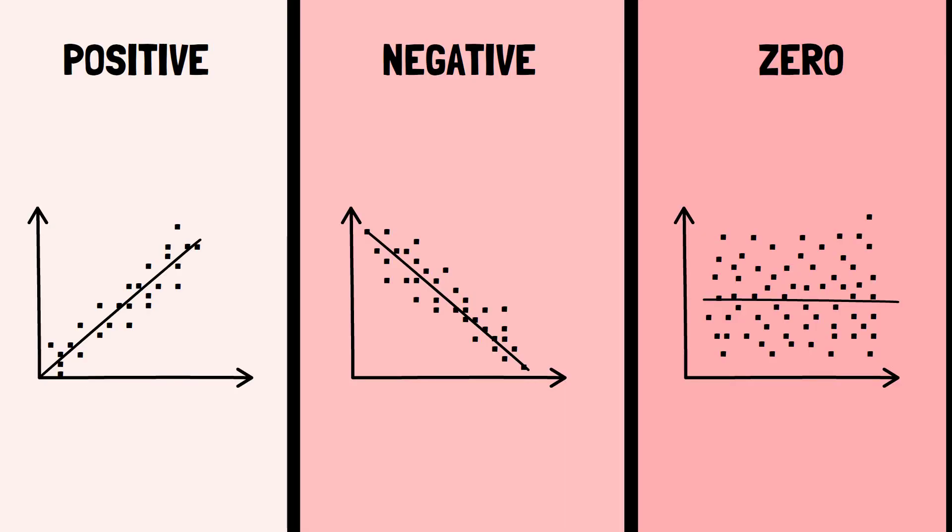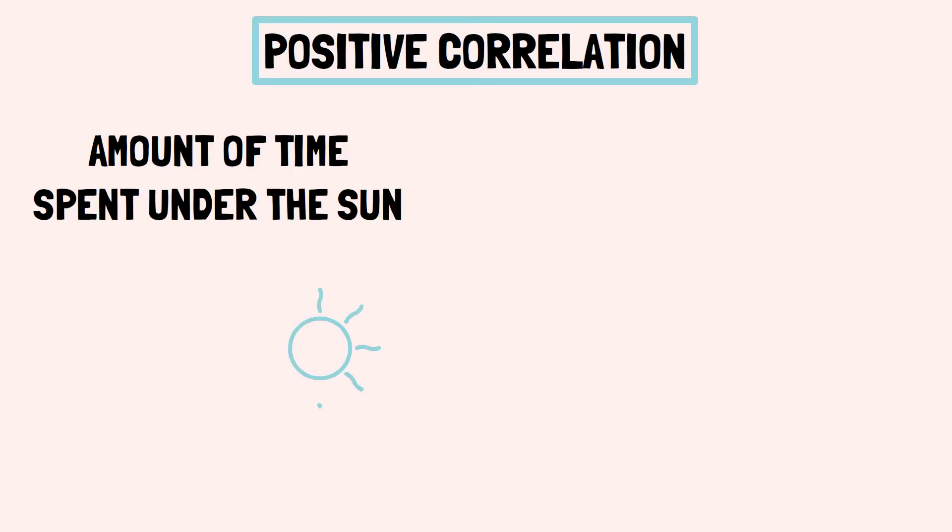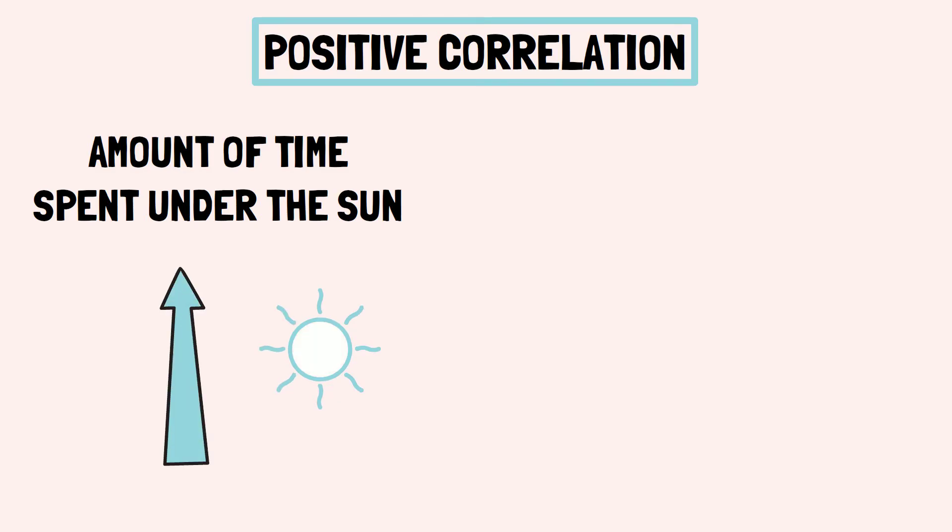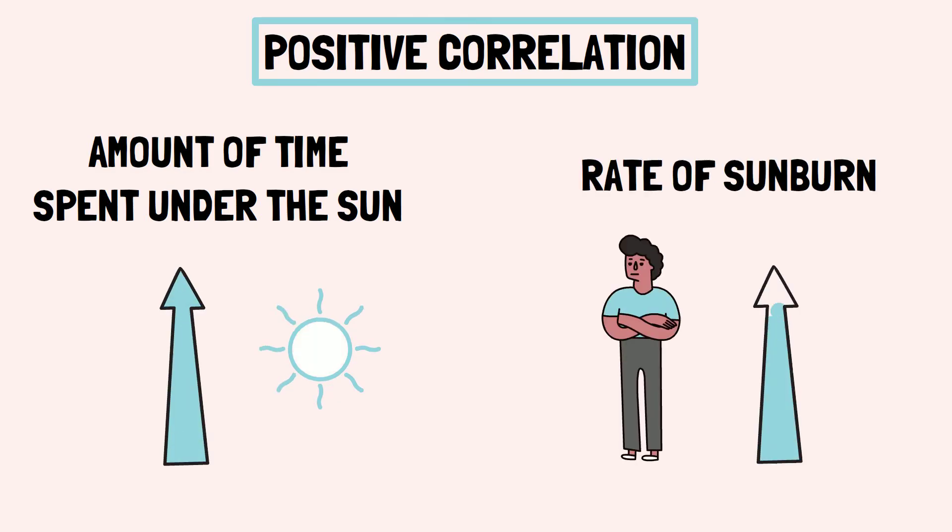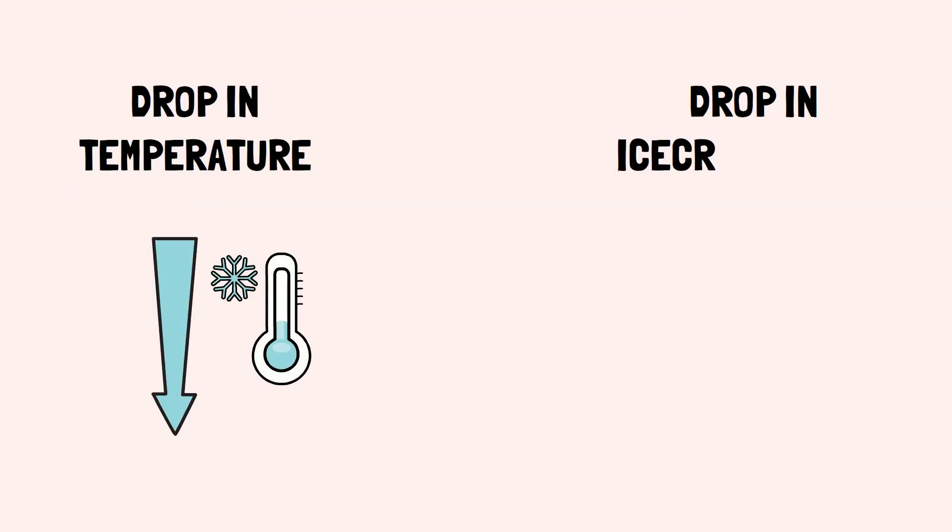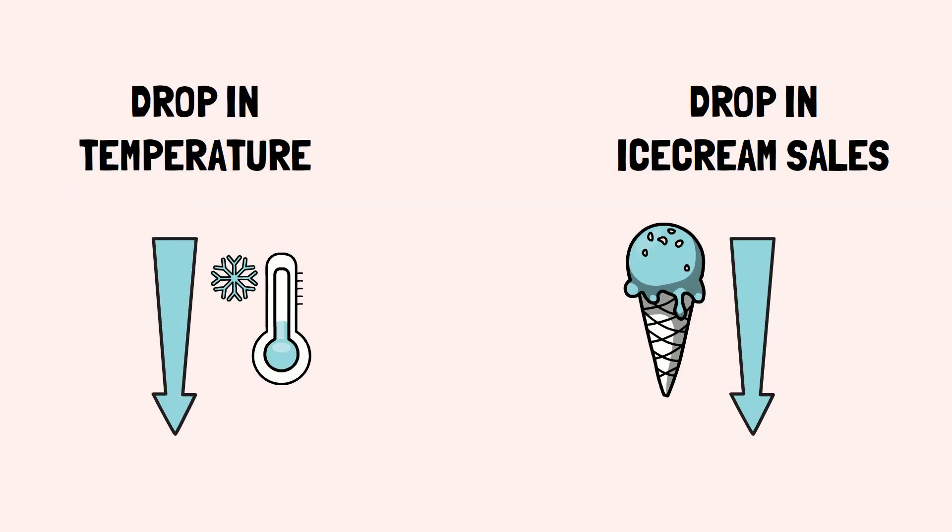The coefficient of correlation is of three types: positive, negative, and zero. A positive correlation indicates that as the value of one variable increases, the value of the other variable will also increase. Similarly, when one variable decreases, a decrease in the other variable also takes place.